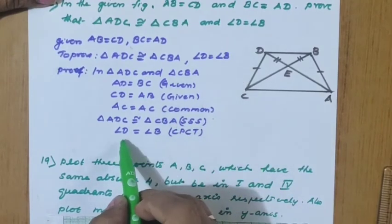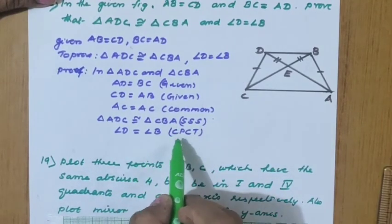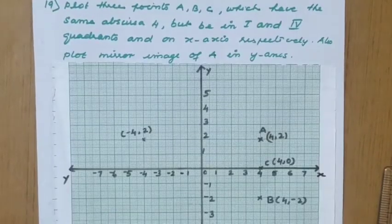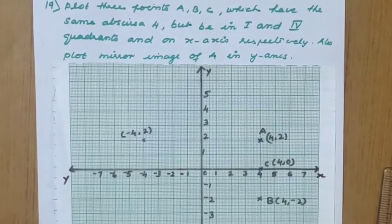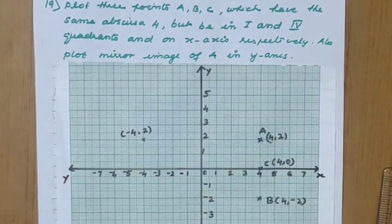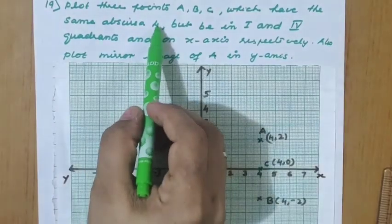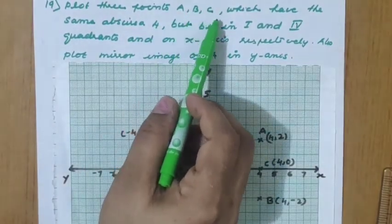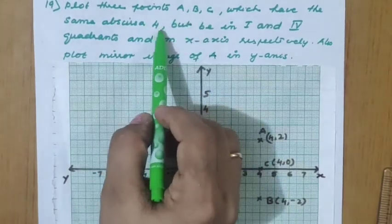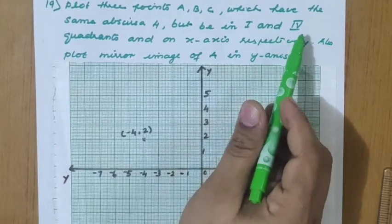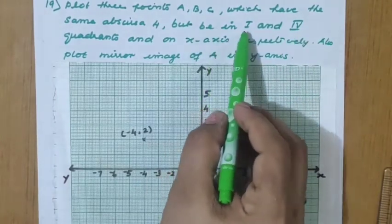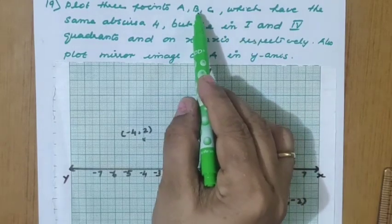Question 19: plot three points A, B, C which have the same abscissa 4 — that means the x-coordinate is the same for all three. A is in the first quadrant, B is in the fourth quadrant, and C is on the x-axis respectively.